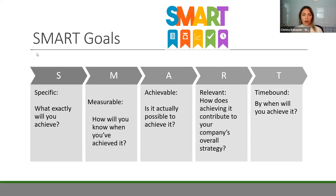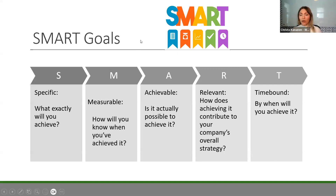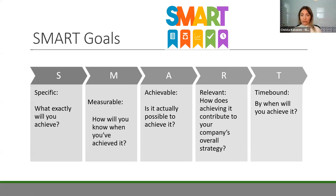We talk a lot about SMART goals. SMART stands for: Specific — what exactly are you going to achieve? Measurable — how will you know when you've achieved it? Achievable — is it actually possible? Having an integrated approach to goal setting can be significant for the achievable piece. Relevant — how does it contribute to your company's overall strategy, not just your sustainability strategy but holistically as a company? And Time-bound — when will you achieve it?